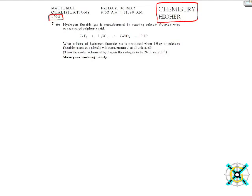The question is 7b, and the question asks: hydrogen fluoride gas is manufactured by reacting calcium fluoride with concentrated sulfuric acid. What volume of hydrogen fluoride gas - so it's important to remember that hydrogen fluoride is a gas here, and they're looking for the volume.